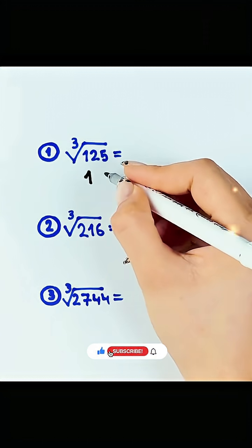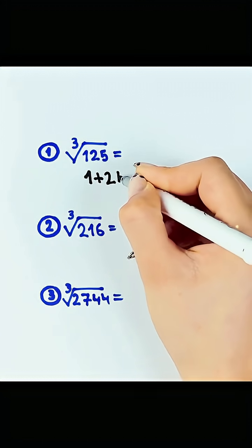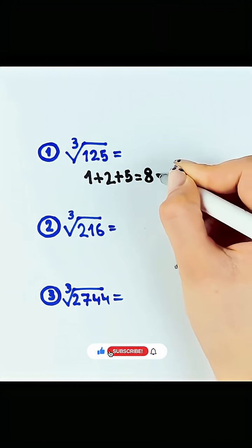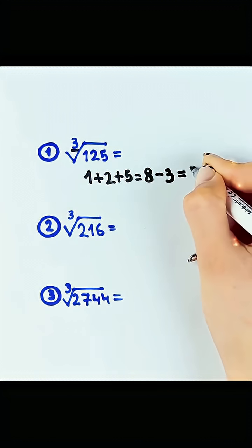Let's move on to cube root tricks. First, we have 1 plus 2 plus 5, which equals 8. Subtract 3, and you get 5.